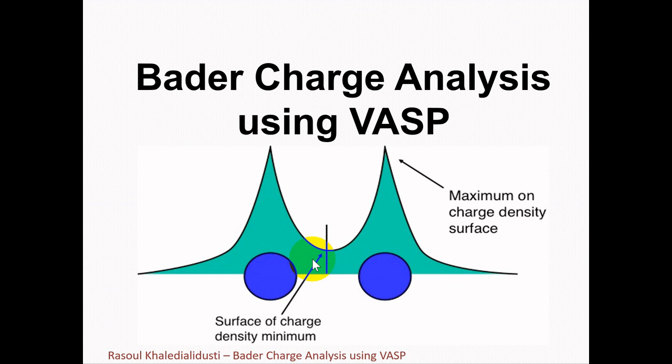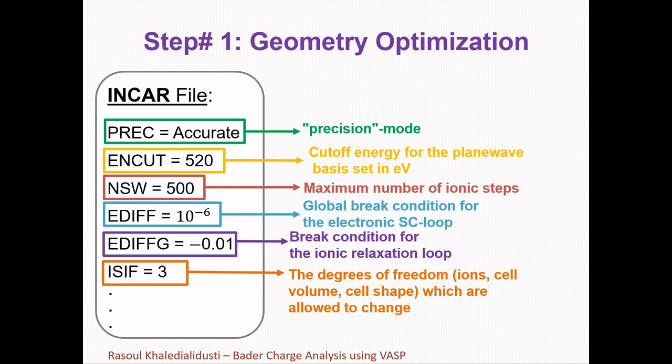Besides being an intuitive scheme for visualizing atoms in molecules, Bader's definition is often useful for charge analysis. For example, the charge enclosed within the Bader volume is a good approximation to the total electronic charge of an atom. The charge distribution can be used to determine multiple moments of interacting atoms or molecules. Bader's analysis has also been used to define the hardness of atoms, which can be used to quantify the cost of removing charge from an atom.